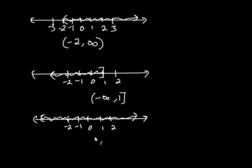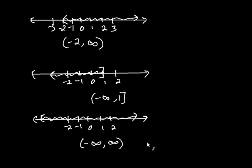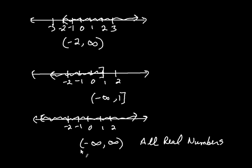What about this last example? Basically all numbers are included — there's no lowest number and no highest number. So combining the two ideas, we write parenthesis, negative infinity, comma, infinity. This denotes all the real numbers. Sometimes in books you see people write out 'all real numbers,' and other times they use interval notation and simply write negative infinity to infinity.